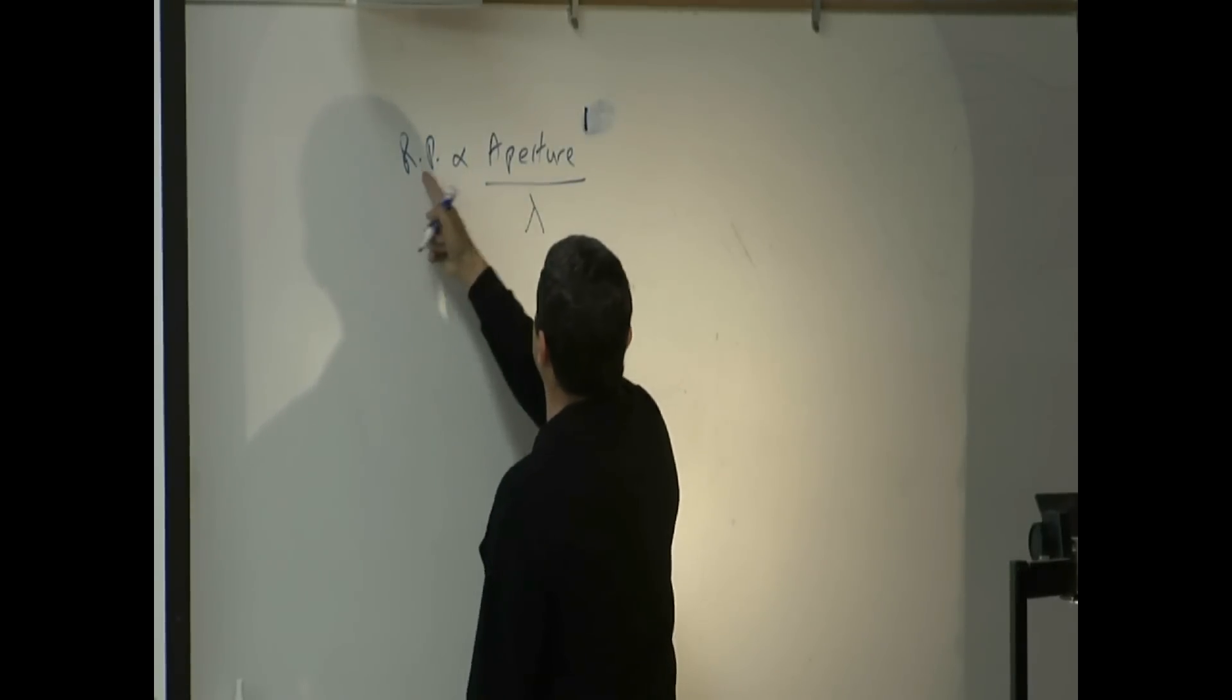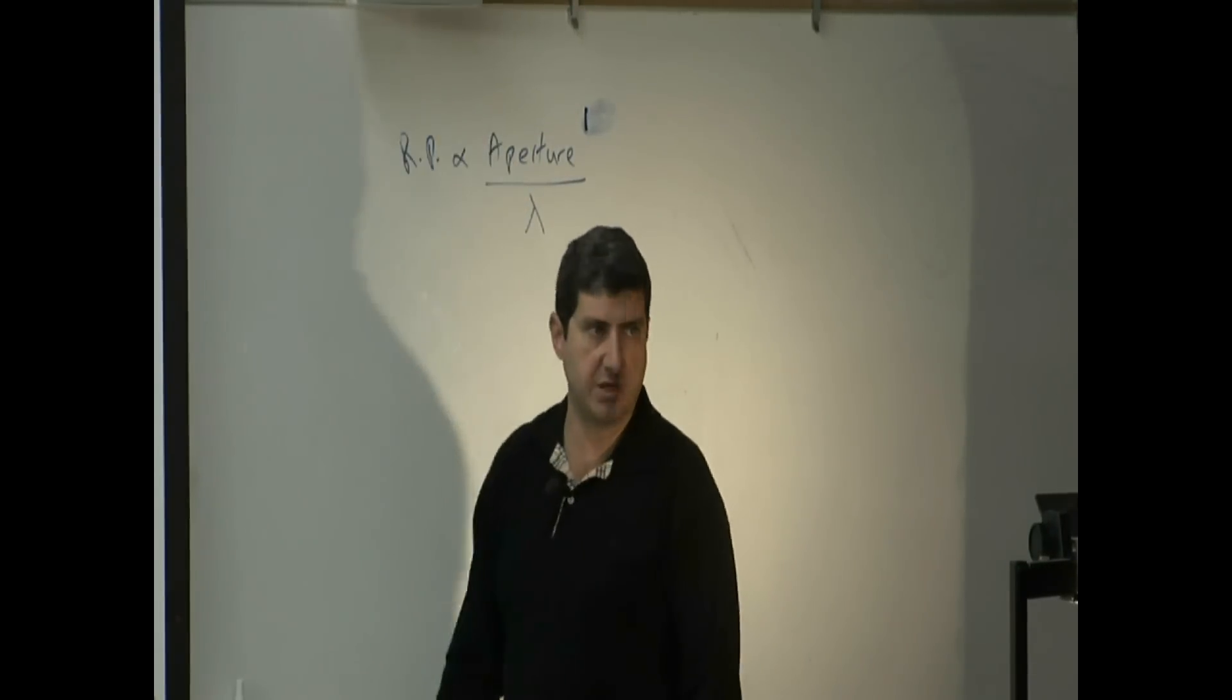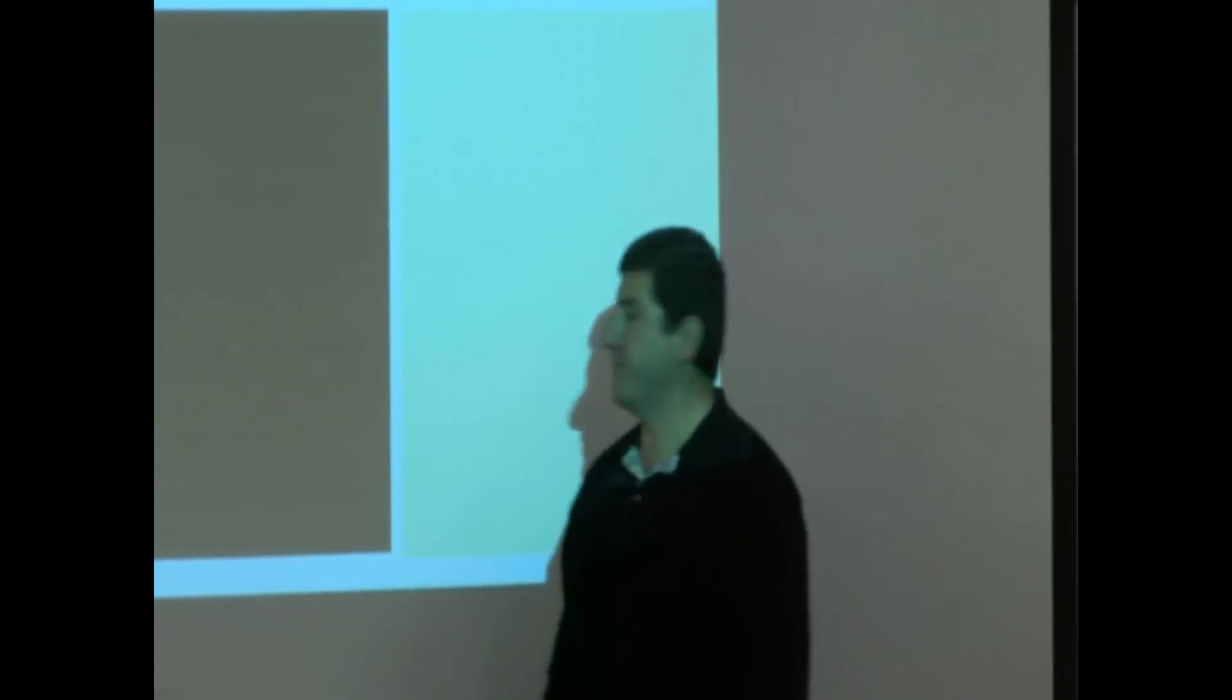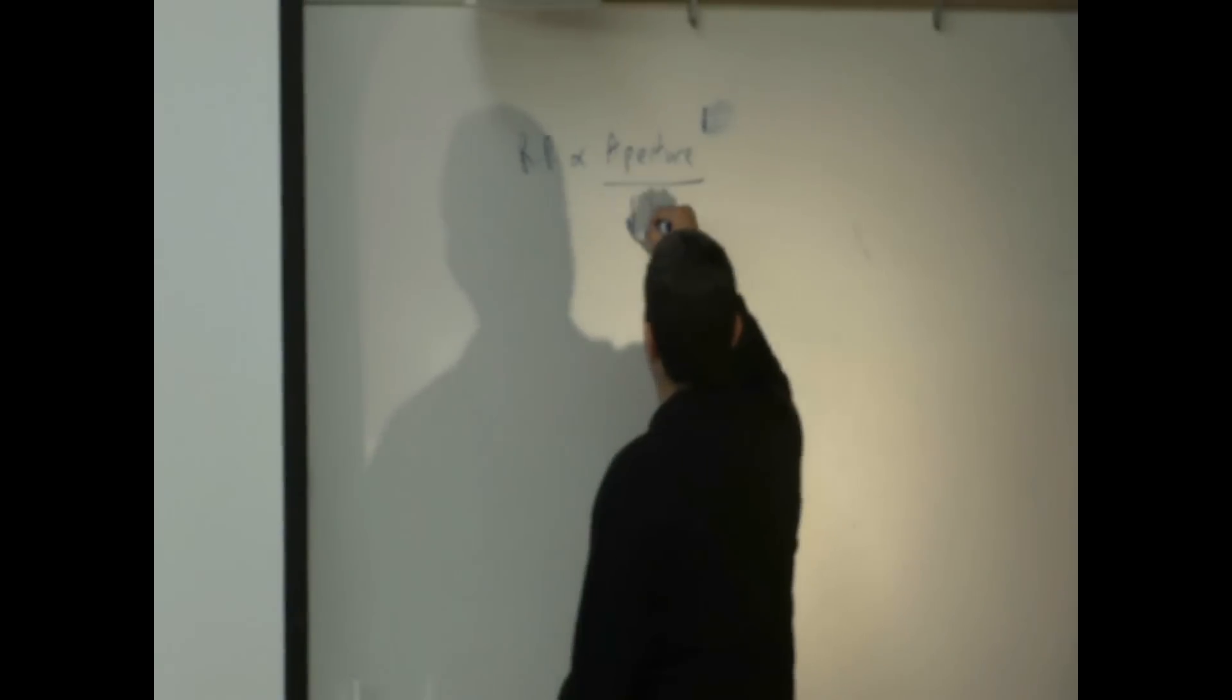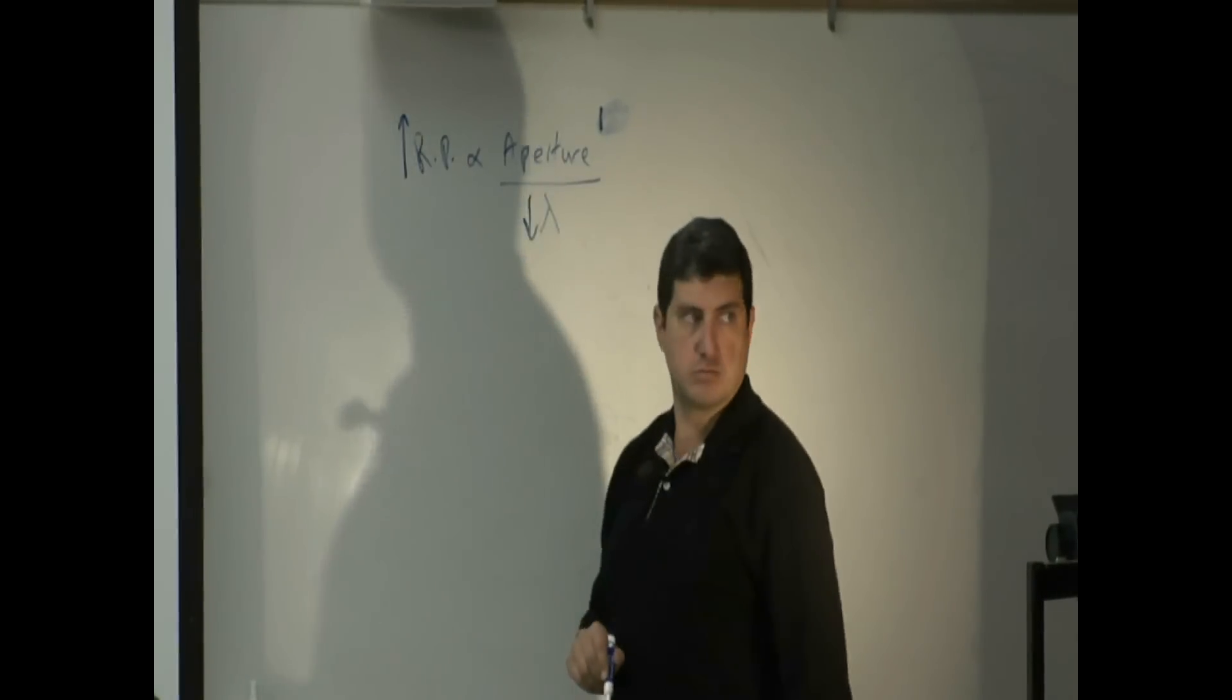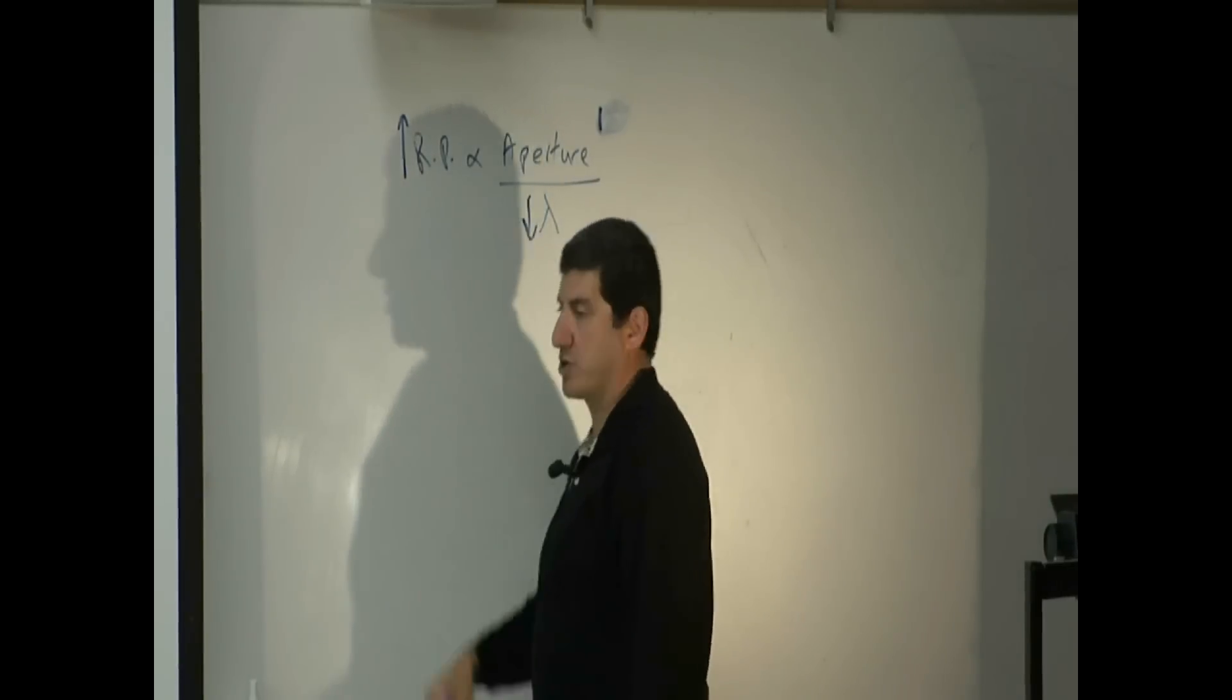It's just a single power. If you double this, this one doubles. Triple this, this one triples. Quadruple, quadruple. You don't have to square anything. Okay? But it also depends on the wavelength that you are trying to view. The smaller the wavelength that you are viewing, the better is the resolving power. The smaller this is, the better resolving power.